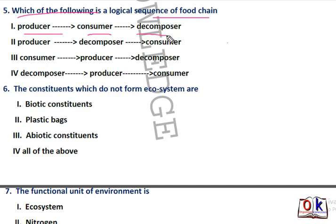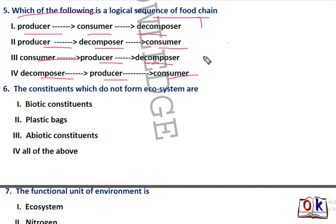Options for the food chain sequence are: producers to consumers then decomposers; or producers to decomposers then consumers; or consumers to producers then decomposers; or decomposers to producers then consumers. In a food chain, first will be producers, then consumers, then decomposers. So the first option is the right answer.